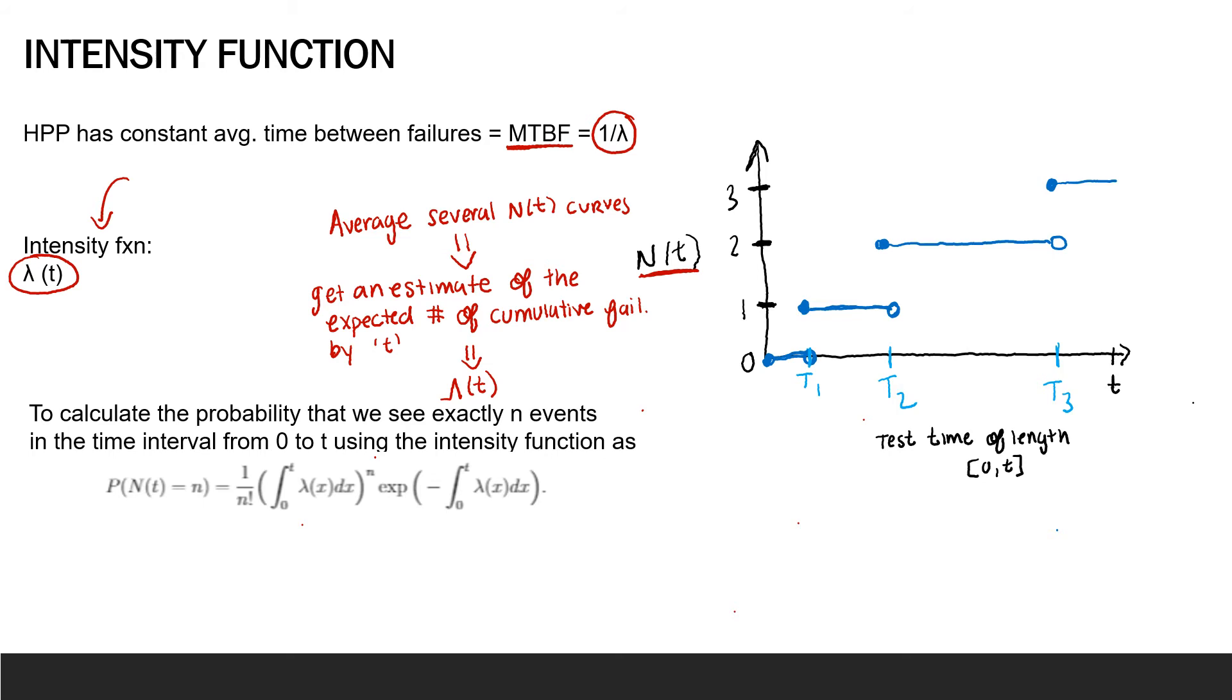Now taking the derivative of this gives the intensity function. So the intensity function is equal to the derivative of this capital lambda of t. And when we take the derivative and we get the intensity function, we get a rate of change in the expected number of failures. Sometimes we call this ROCOF. ROCOF stands for rate of occurrence of failures.